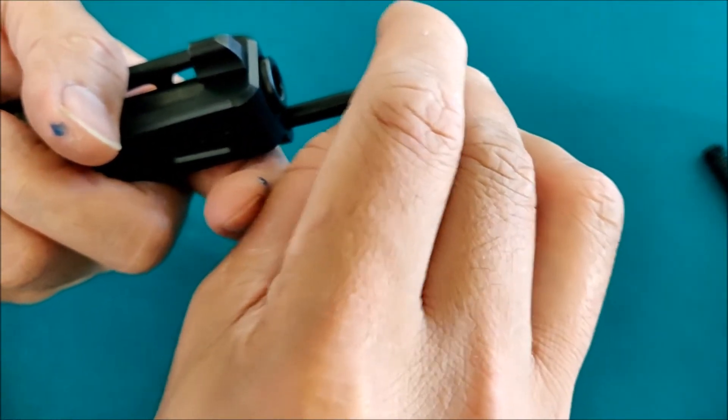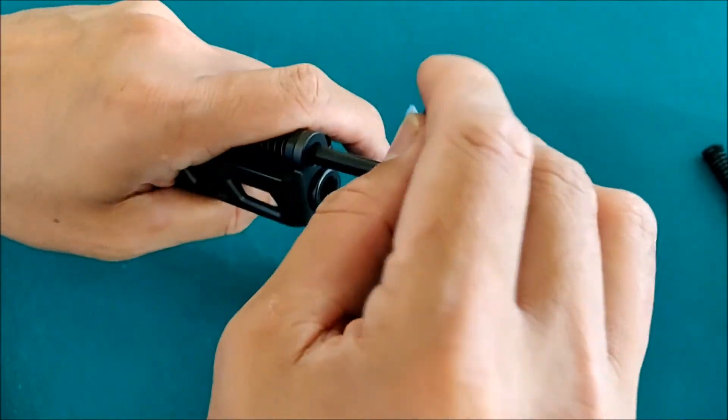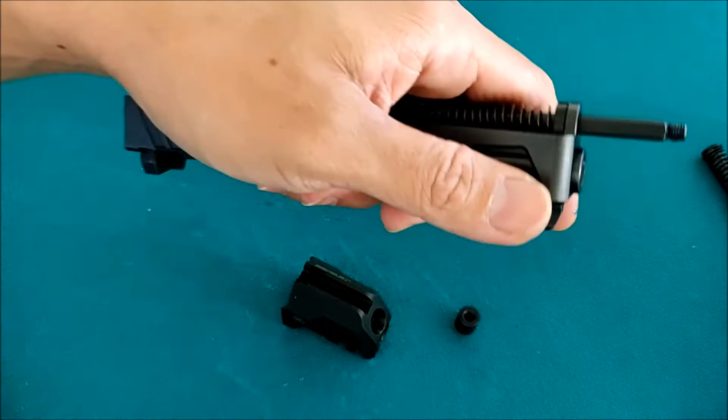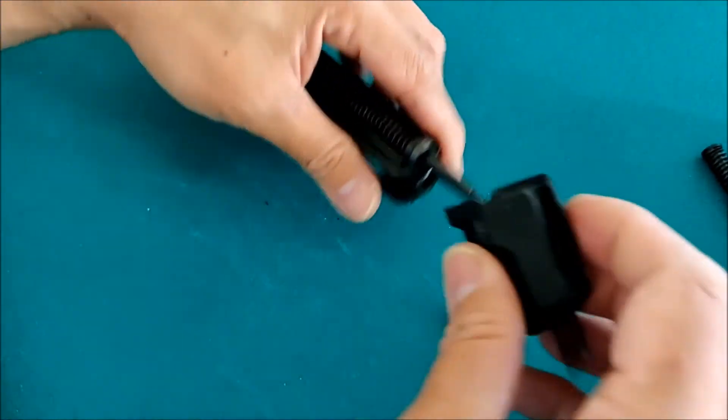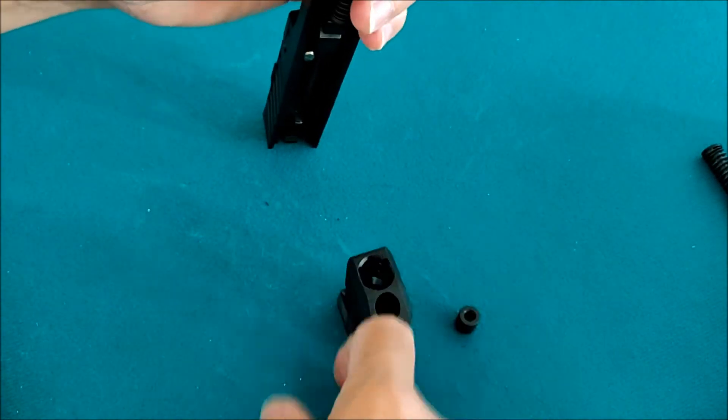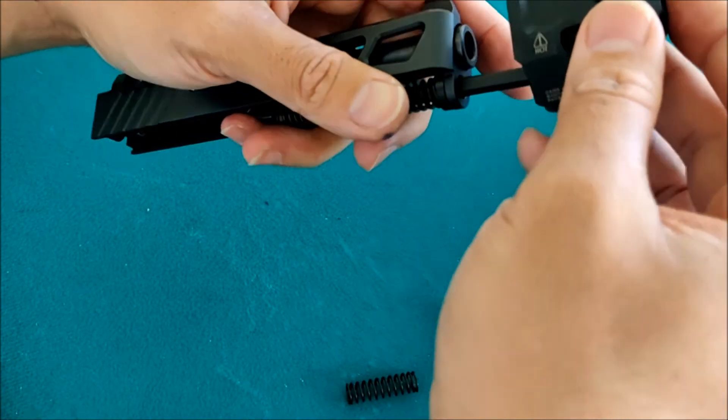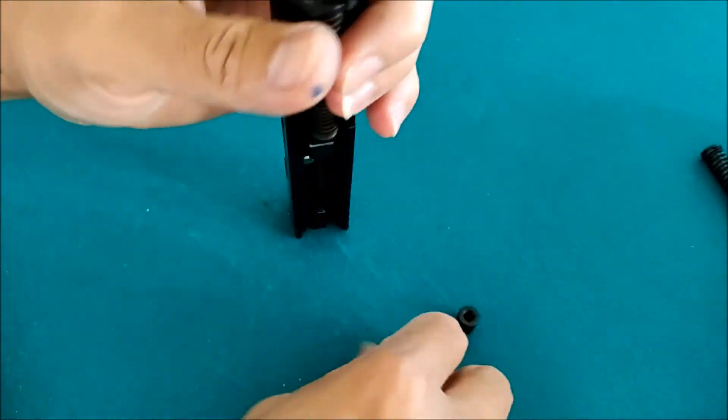So nilagyan ko lang siya ng paikot. So yung kulay blue na yan, yan yung loctite na kasama sa package. So yung spring, nilagay ko na yung compensator muna.